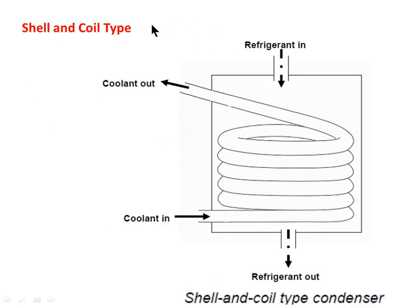Next is the shell and coil type condenser. This is very similar to the previous type: coolant enters from one side, extracts heat, and leaves from the other side. The refrigerant enters into the shell, rejects heat to the coolant, and moves out from the other side as refrigerant outlet. This is the shell and coil type of condenser.